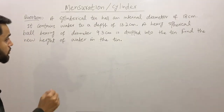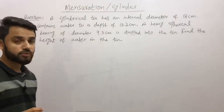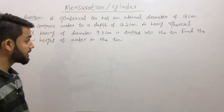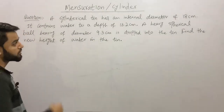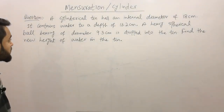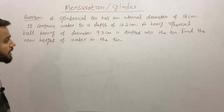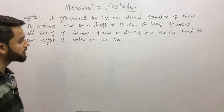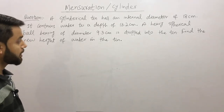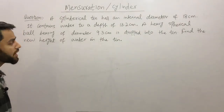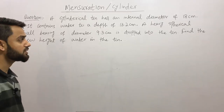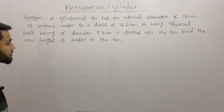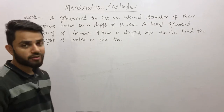I am going to read this question and then identify the key portions. It says: a cylindrical tin has an internal diameter of 18 centimeters. It contains water to a depth of 13.2 centimeters. A heavy spherical ball bearing of diameter 9.3 centimeters is dropped into the tin. Find the new height of water in the tin.